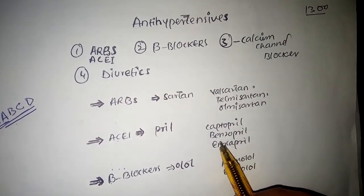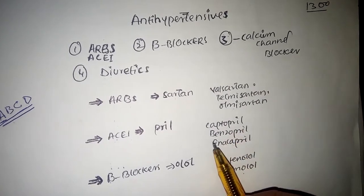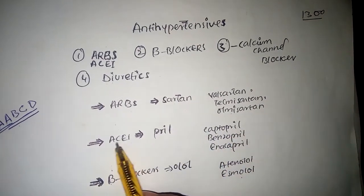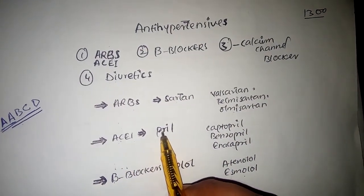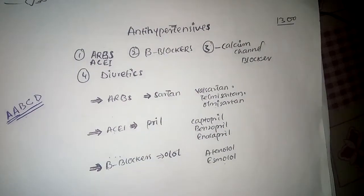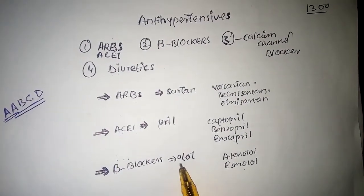If someone pronounces any drug with the name pril, you must say this is an ACE inhibitor. Another identification is olol.